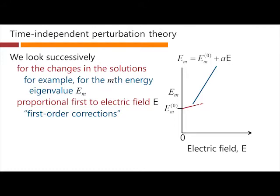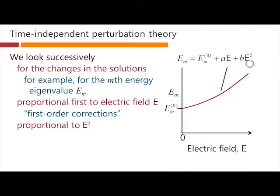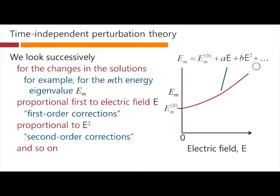Of course, that might not be quite enough. The change of energy with field might not be linear. Perhaps there's some part of it that's proportional to the square of the field, which would give some curvature to this line. We would call the additional changes that were proportional to the square of the field second-order corrections. And we could keep on going with this to higher and higher orders.